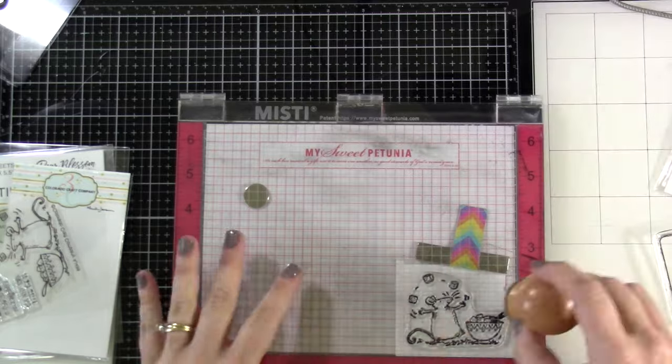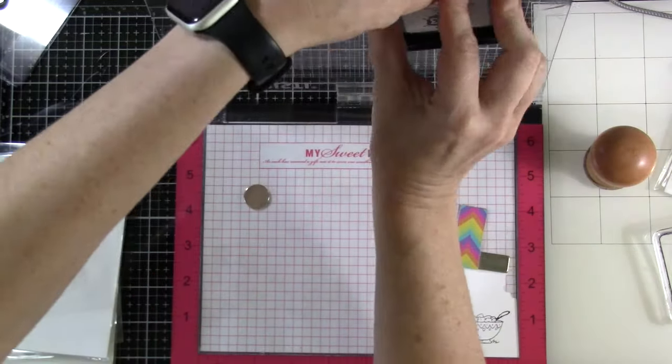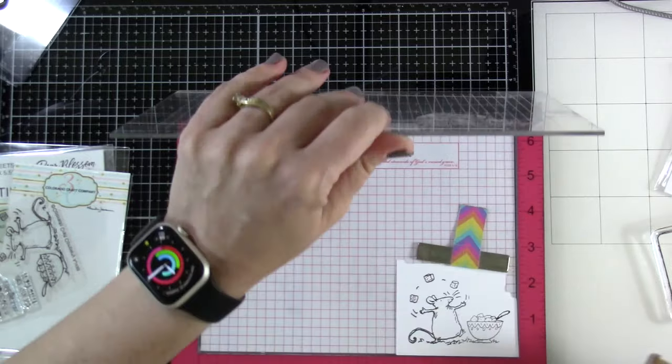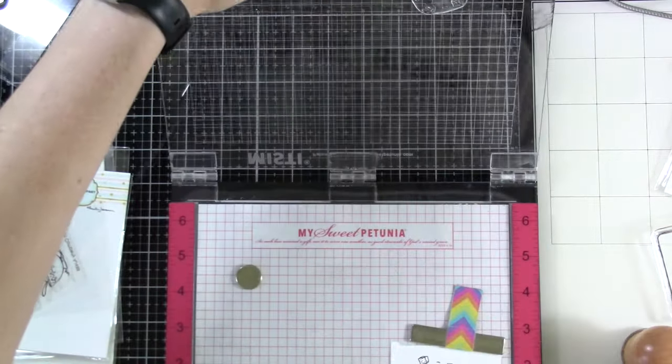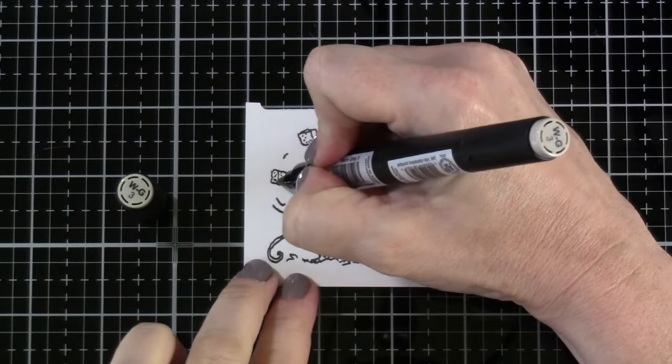We're going to stamp out our darling little mouse image who is juggling some sugar cubes. We're going to stamp him using some ink on three blackout ink, and I'm stamping that onto some Express It Blending Card, which is really good for alcohol marker coloring.